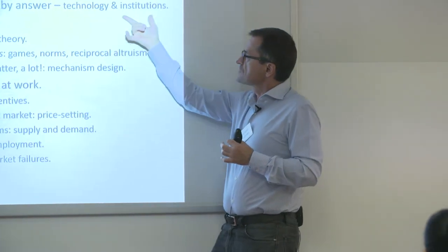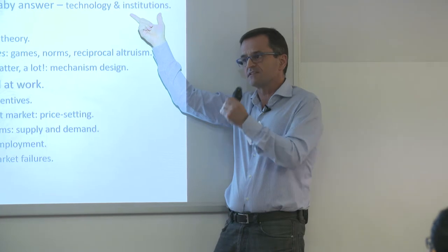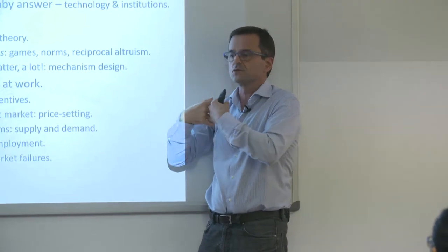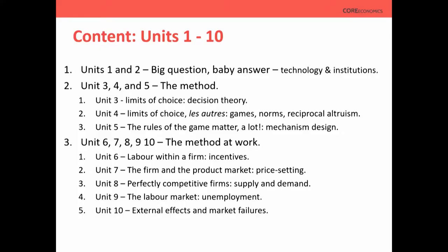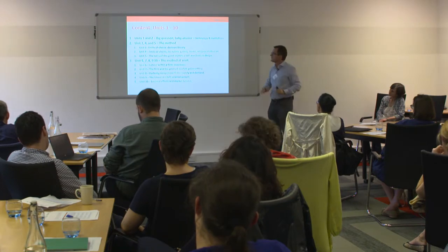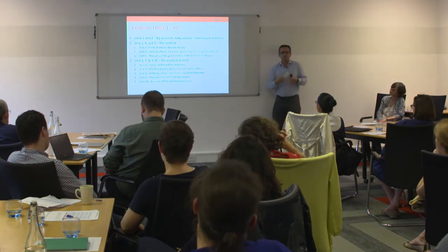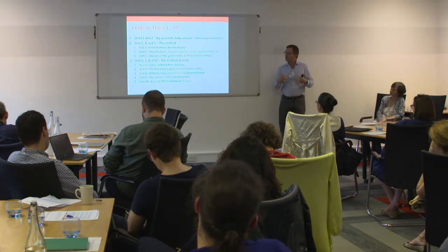We make the connection between technology and institutions — these technological revolutions wouldn't have arisen without changing institutions; they go hand in hand. In some sense we're a little bit of a Marxian textbook because we think the two things go hand in hand: the infrastructure and the superstructure. Once you set up this framework, over the next 20 weeks we start with three units that I call the 'core of the core' — the methodological tools you need to analyze everything that follows.